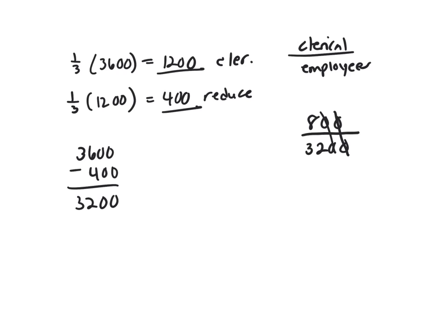Cancel those zeros. Eight goes into eight one time, eight goes into 32 four times. So that's going to be 25%.